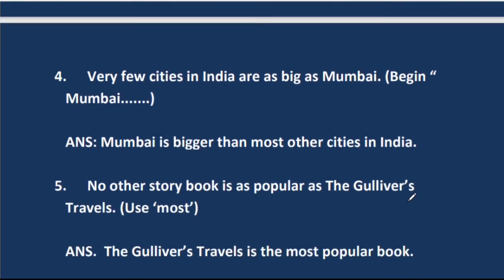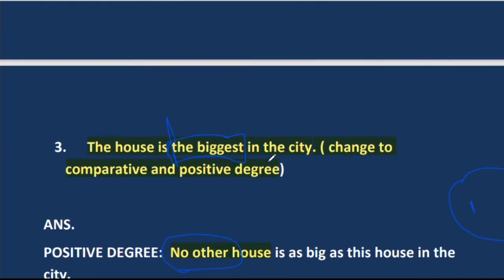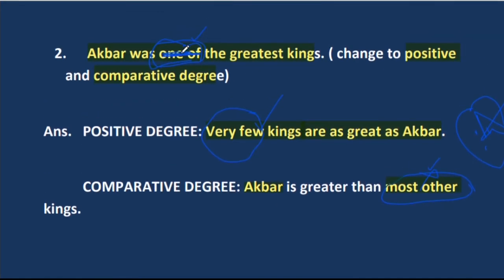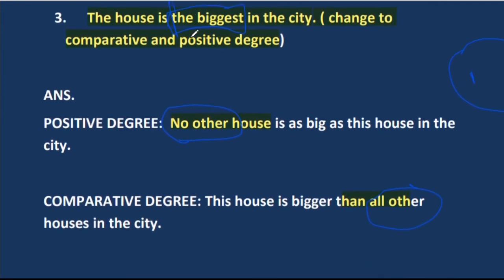Sentence number four: very few cities in India are as big as Mumbai, and we are told to start the sentence with Mumbai. 'Very few cities' means one or two cities are as big as Mumbai, so this is the 'one of' case — similar to the second sentence. Therefore, Mumbai is bigger than most other cities in India.